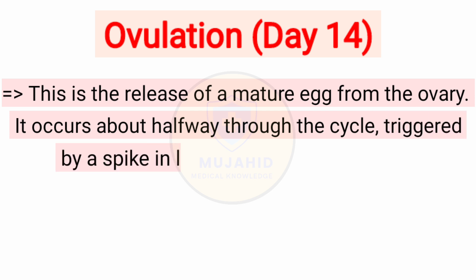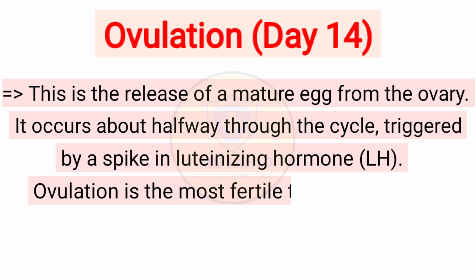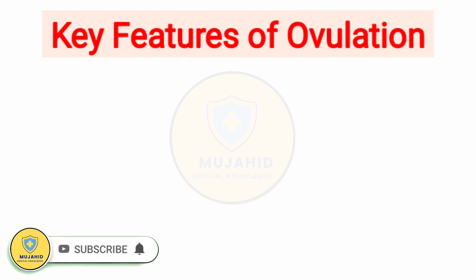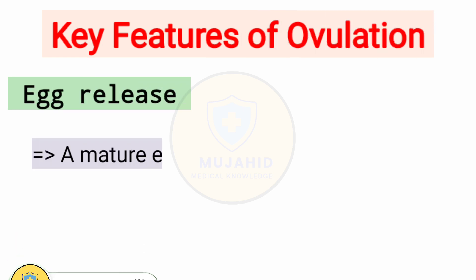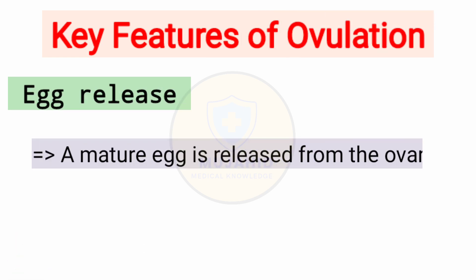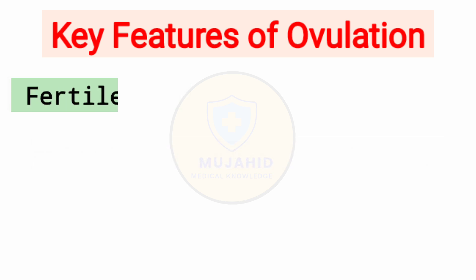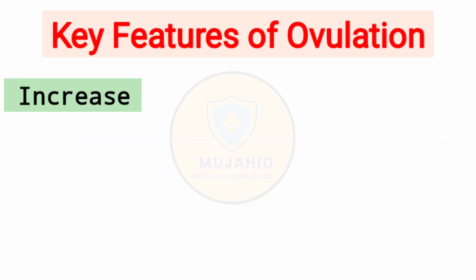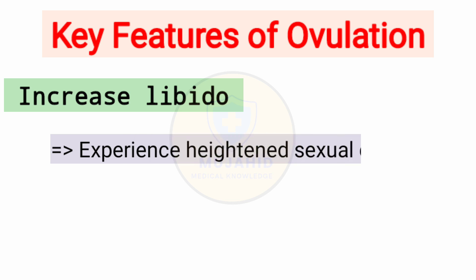Ovulation occurs about halfway through the cycle, triggered by a spike in luteinizing hormone. It is the most fertile time of the cycle. Key features: a mature egg is released from the ovary, creating the fertile window with the highest chance of pregnancy. Some women also experience increased libido and heightened sexual desire.